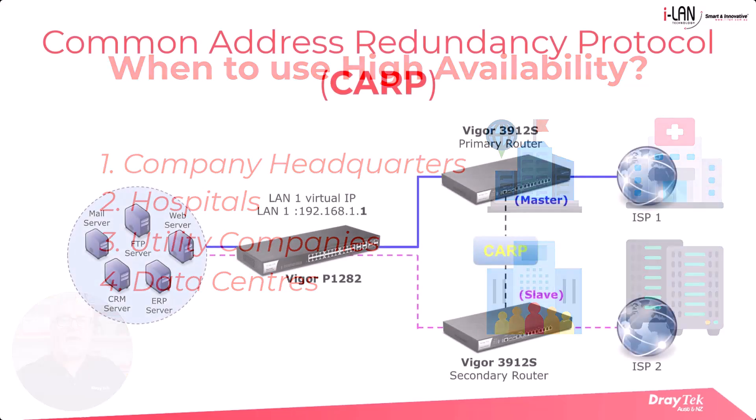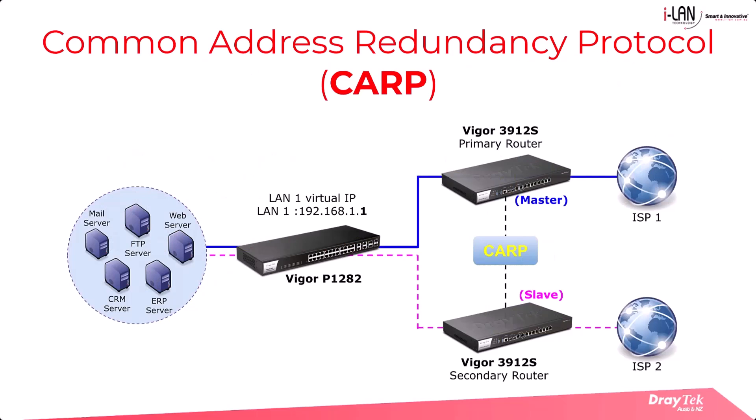High availability in Draytek routers works by utilising the Common Address Redundancy Protocol, known as CARP, which allows multiple hosts on the same local area network to share a virtual IP address. That common virtual IP address is shared among all the routers in the high availability group and serves as the default gateway for all clients in the network.